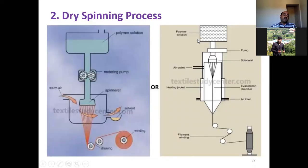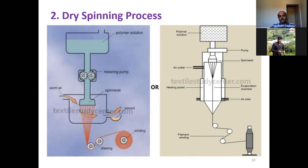The second technique is dry spinning. Again, we have two diagrams and you can use any one of them in an exam. Looking at the diagram of dry spinning, we can see polymer solution, spinneret, and warm air — compared to wet spinning which used a coagulation medium. The other parts include air outlet, heating jacket, operation chamber, air inlet, and filament winding.